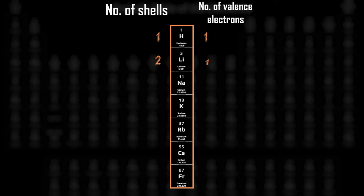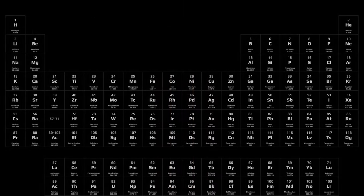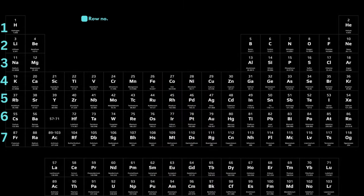The number of electron shells may increase with each subsequent row, but the number of valence electrons will not change. While the row numbers indicate the number of shells, the group number indicates the number of valence electrons.